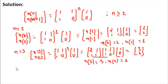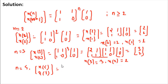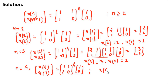Similarly, when you put n = 4, you get [x[4], x[3]] = [[1,1],[1,0]] to the power 4 times [1, 0], and you will get x[4] = 5 and x[3] = 3.